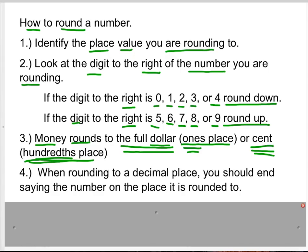Number four: when rounding to a decimal place, you should end saying the number on the place it is rounded to. So if it says round to the tenths, the last thing you should say is tenths. If it says round to the nearest hundredths, the last thing you should say is hundredths.